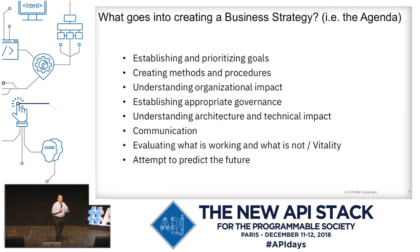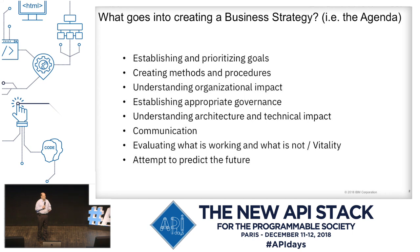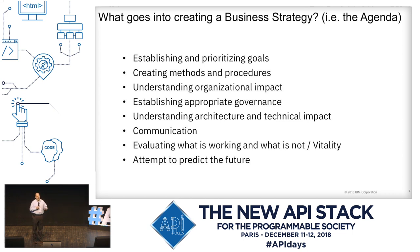I've been doing roles like this at IBM for quite a long time, and I started to think about how do I build a strategy for anything. First, we need to understand our goals and priorities. Then I have to think about creating methods and procedures. Is there an organizational impact? Roles and responsibilities? How do I deal with governance? And then, of course, the technology and architecture. When we change something in our enterprise, we have to communicate this. Finally, figure out what's working and what's not, and iterate.